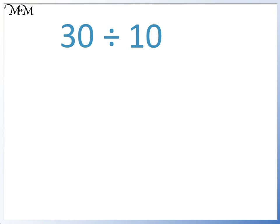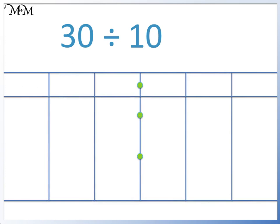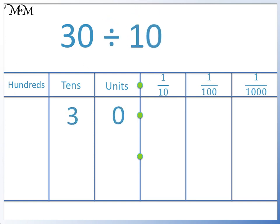Let's use an example from the 10 times table: 30 divided by 10. To see what's happening, let's use a place value grid. We have hundreds, tens, units, tenths, hundredths and thousandths. We place 30 on the grid. When we divide by 10, we move each of the digits of 30 one place to the right. So the 3 moves to the units column and the zero moves to the tenths column. The number we have now is 3.0. If we only have zeros after the decimal point, we can ignore them. So the number we have is 3. 30 divided by 10 equals 3.